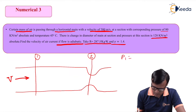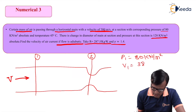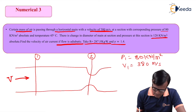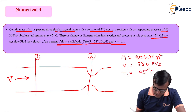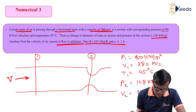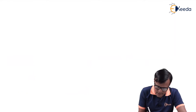Given data: p1 = 80 kilonewton per meter square, v1 = 380 meters per second, T1 = 45 degrees centigrade. At section 2, p2 = 128 kilonewton per meter square. The unknown to be calculated is v2. We will now apply Bernoulli's equation.